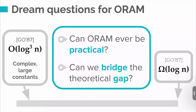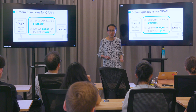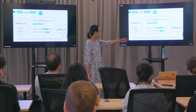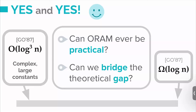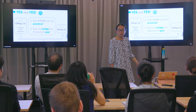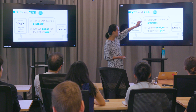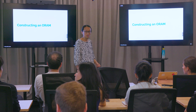I started working on ORAM in 2011. The two important questions were: can we ever make ORAM practical, and can we bridge the theoretical gap between the upper bound and lower bound? In more than 10 years, we were able to answer both. For the first question, I'll tell you about the large-scale deployment of ORAM. For the second, we were able to construct an optimal ORAM with log n overhead — but the theoretical construction and the practical one happen not to be the same. I'm focusing on the practical side today.